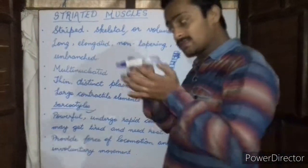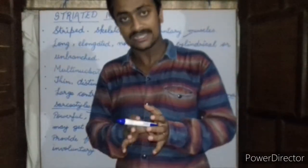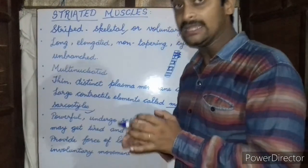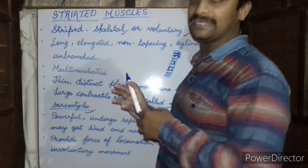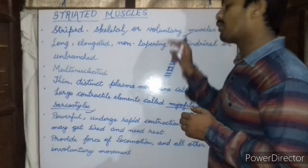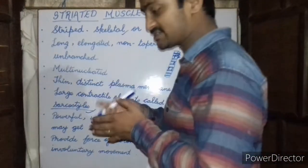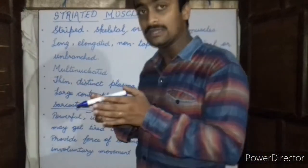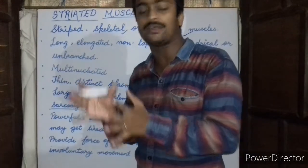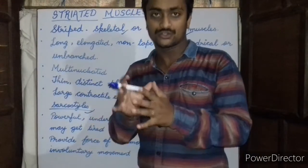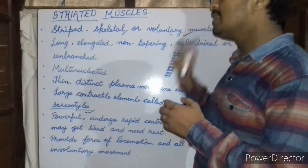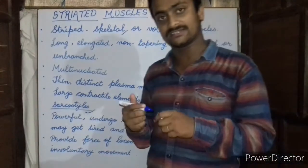Since these muscles are attached to the bones and are responsible for movement, they are also called skeletal muscles. The last name is voluntary muscles. These muscles move according to our wish and will, as and when required, and that is why they are also called voluntary muscles.